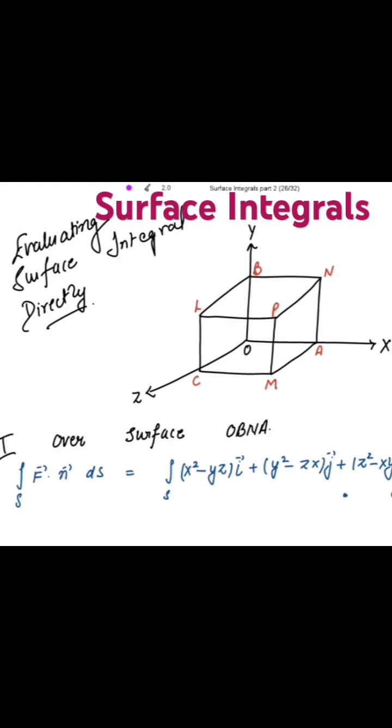So first, over the surface O, B, N, A. The surface integral of the dot product of f vector with n vector ds is equal to - I have already written the value of f vector over here - and what is n vector for this surface?